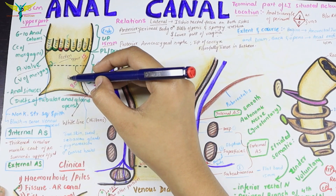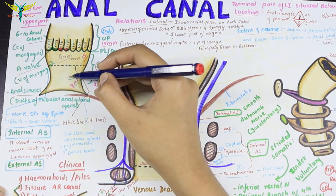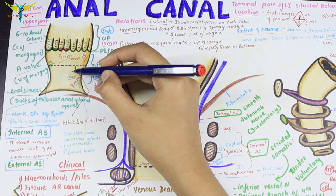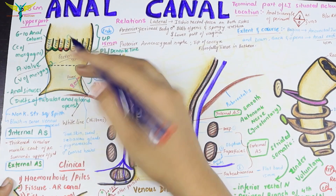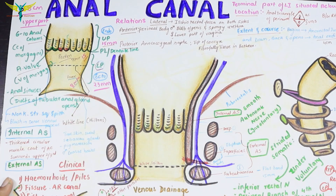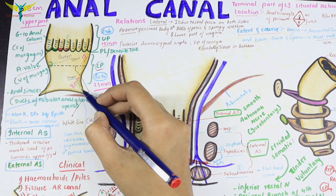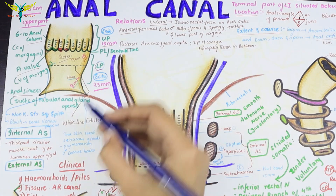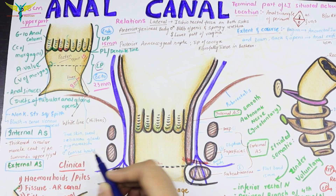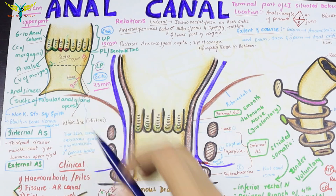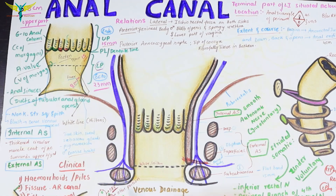The lower region of the lower part is pigmented and covered by true skin with sweat glands and sebaceous glands. In adult males, coarse hairs are seen in this lower region.